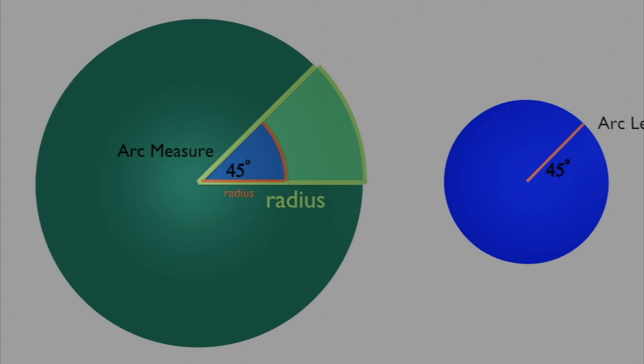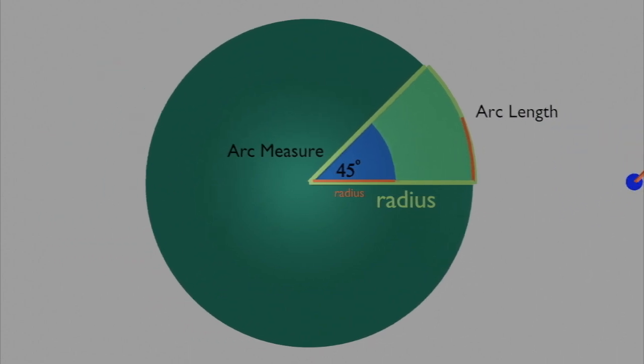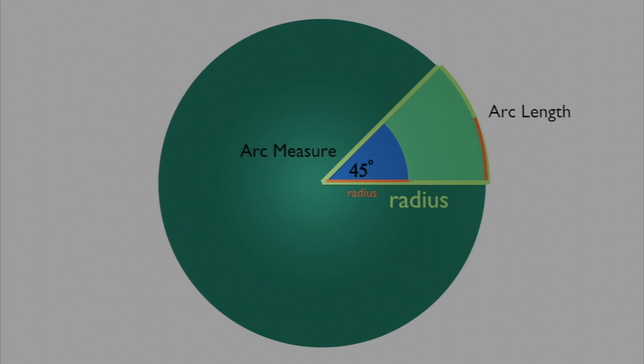The arc length of the blue wedge, the orange line, is half the length of the arc length of the green wedge, or the light green line. These two wedges can have the same arc measure, but the arc length is dependent upon the radius of the circle.